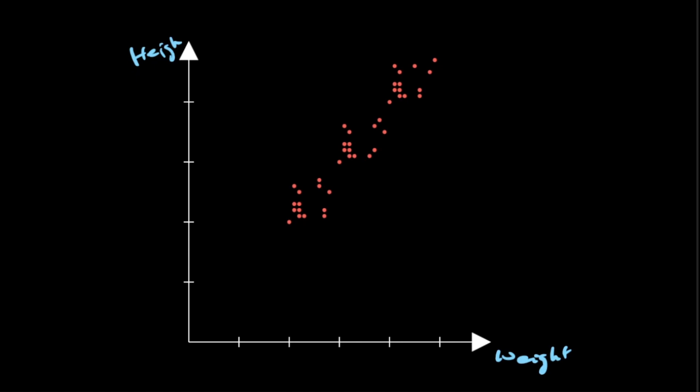In this case, we can calculate the variance of this particular data set in each direction by taking the projection of these data points in that specific direction and applying the variance formula.